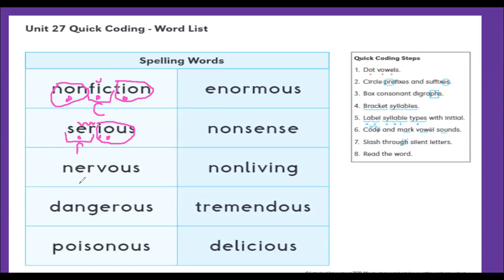Our next one is nervous. We dot our vowels. We circle any prefixes or suffixes. Our O-U-S is our suffix that we circle. 'Nerve' is our word that we do our syllable bracket. We underline the E-R because we know it's an R-controlled vowel.